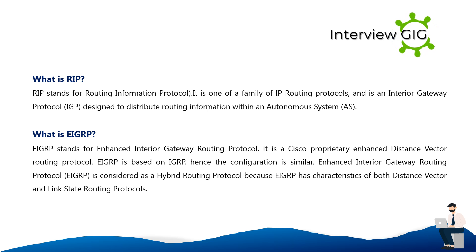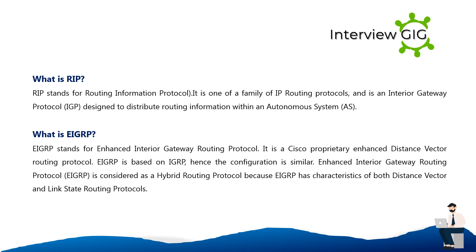What is IGRP? EIGRP stands for Enhanced Interior Gateway Routing Protocol. It is a Cisco proprietary enhanced distance vector routing protocol. EIGRP is based on IGRP, hence the configuration is similar. EIGRP is considered a hybrid routing protocol because it has characteristics of both distance vector and link state routing protocols.